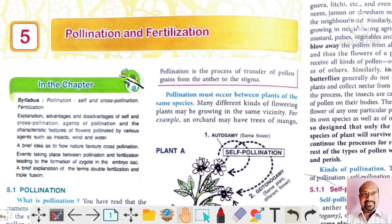Hello, dear students. Today we will discuss Chapter 5: Pollination and Fertilization. As we all know, anthers are the male organs and pistils are the female organs of a flowering plant. Anther produces pollen grains and pistils contain stigma at the top for initiating the process of reproduction — that is, the process of formation of fruits and seeds.